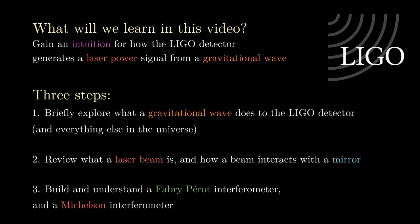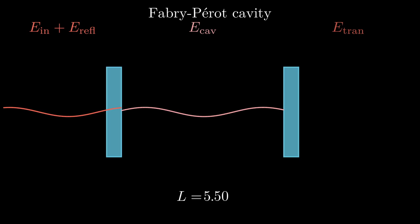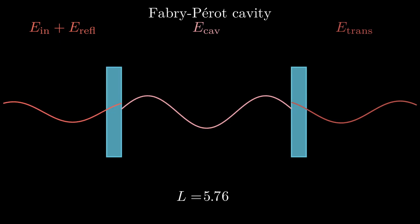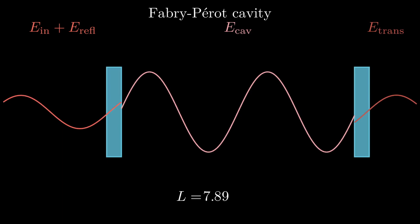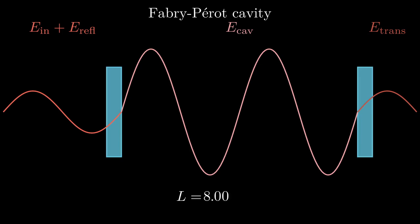Now we'll build a Fabry-Perot interferometer. This is a Fabry-Perot cavity, just two well-aligned mirrors, separated by some distance L. Let's inject a test beam inside of our cavity, and see what happens when we move the length around. Whoa, we seem to get a huge spike in power at two different lengths. Let's take a closer look.